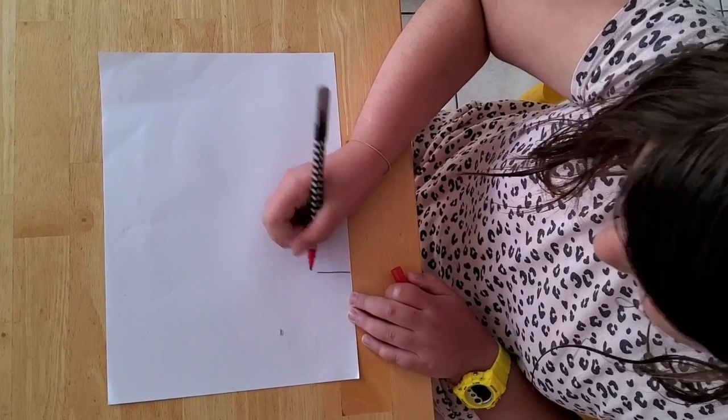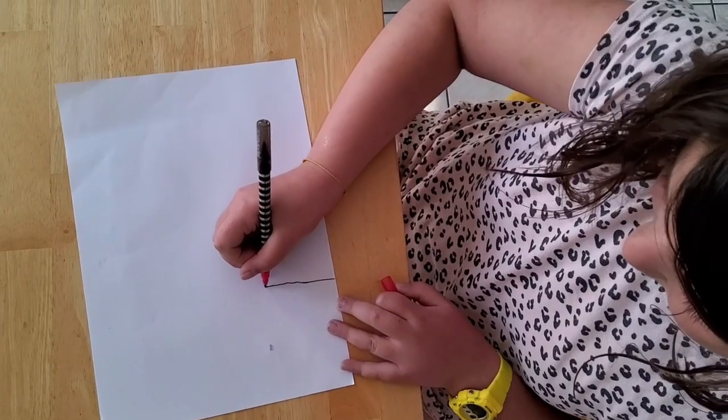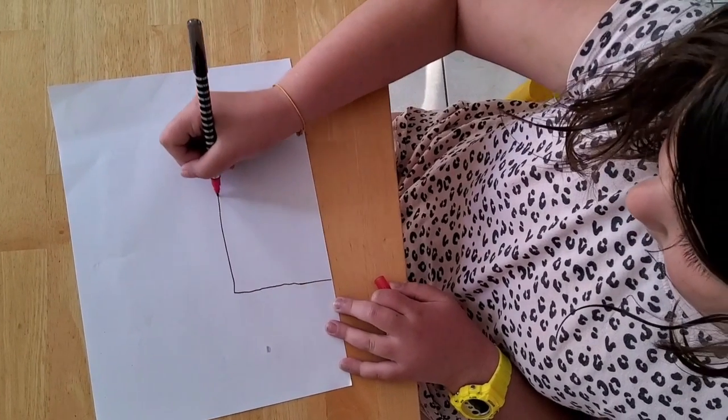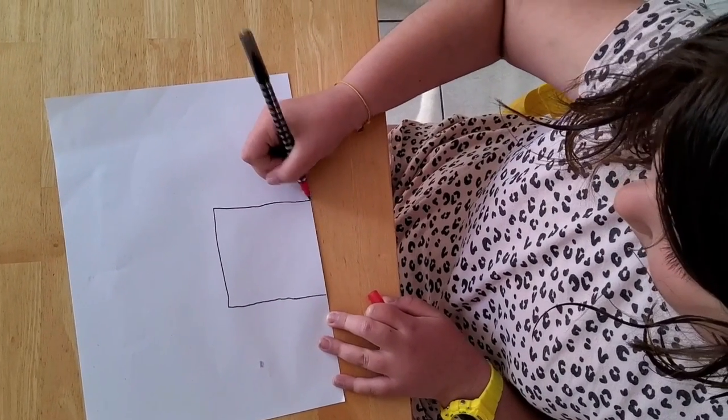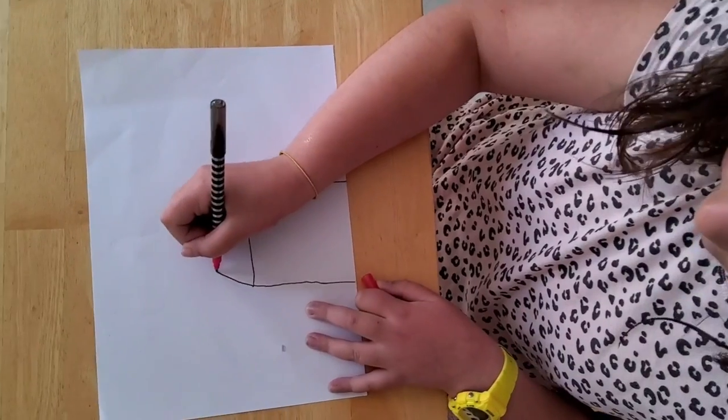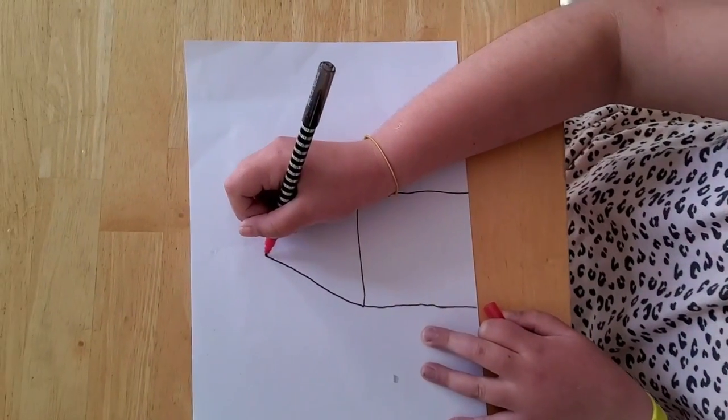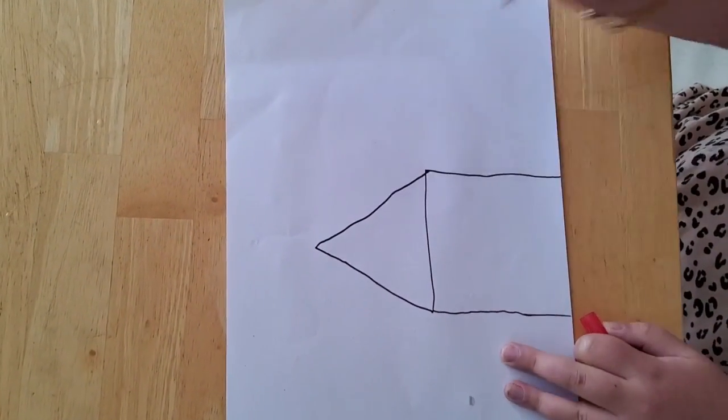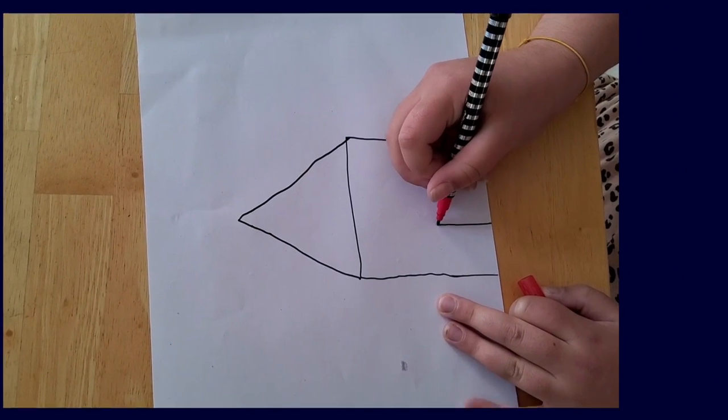When we were kids, we used to draw small houses just like the one that the girl is drawing in the video clip. For every new line she draws, she places the marker at one point and slides it until she finishes the line. From the very beginning, she knows exactly where she wants every vertex of the house to be.